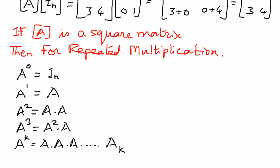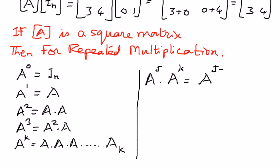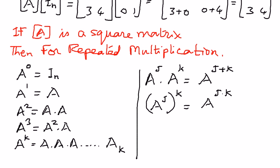We also have these power properties: if we have A to the power of J times A to the power of K, the exponential properties work here as well — we can write this as A to the power of J plus K. And if we have A to the power of J, raised to another power K, we can write this as A to the power of J times K. Some exponential properties are applicable in matrix operations as well. These are some of the properties related to the identity matrix, and we will use them to solve simple examples in the next presentation.